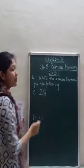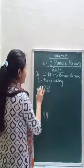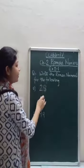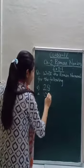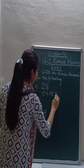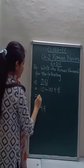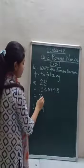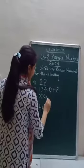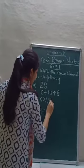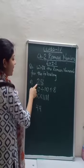Now moving on to Exercise 2.1. Question number 1: write the Roman numerals for the following. We have a Hindu-Arabic number and we have to convert it into Roman numerals. To do this, break or split the number. For 28: X denotes 10, XX denotes 20. For 8, we write VIII — V is 5, then 6, 7, 8. So the Roman numeral of 28 is XXVIII.